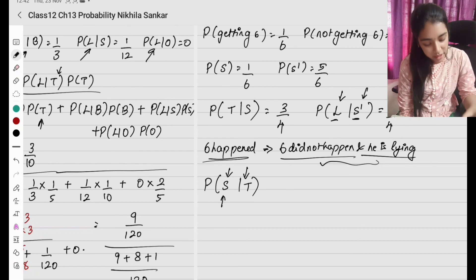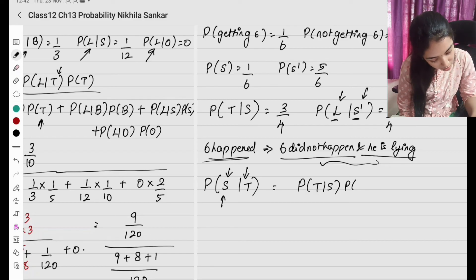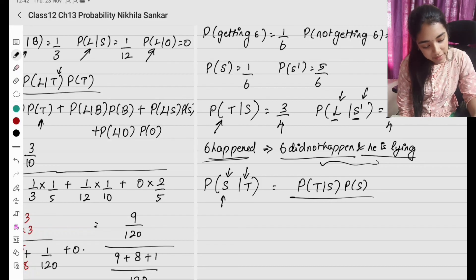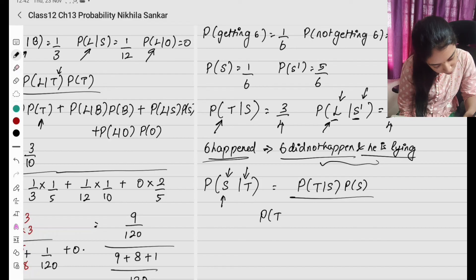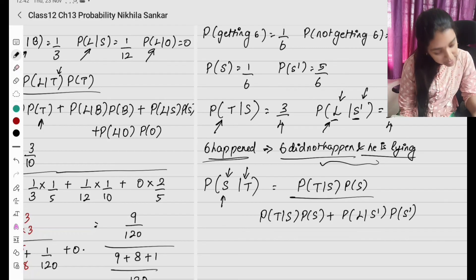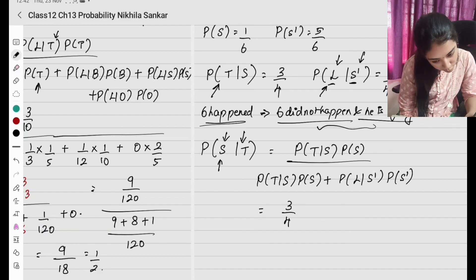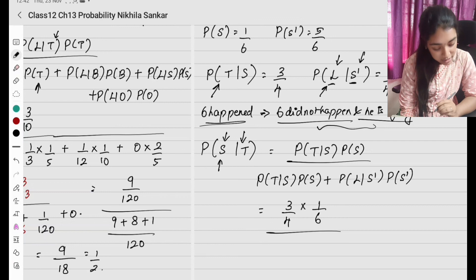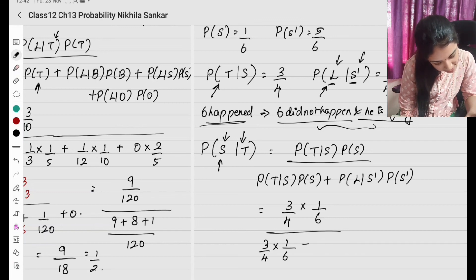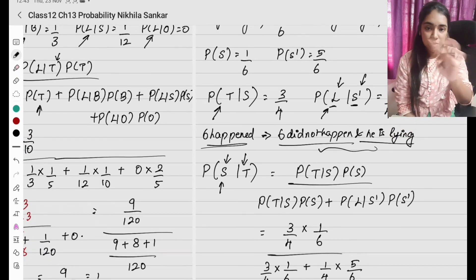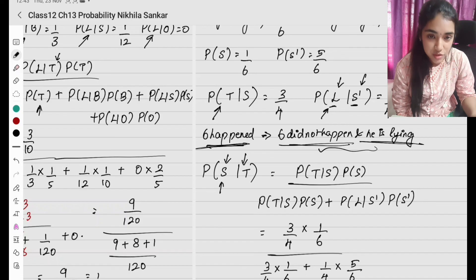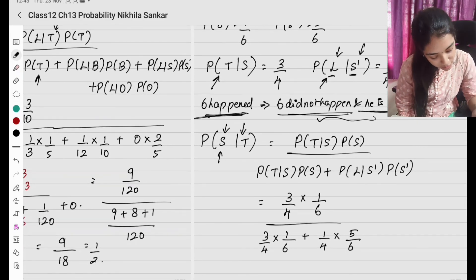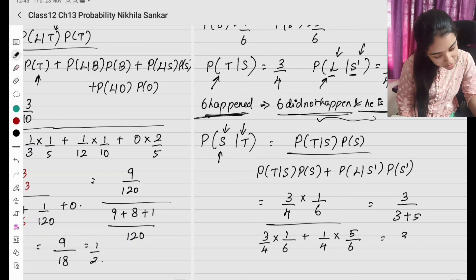Using Bayes' formula: probability of T given S times probability of S, divided by probability of T given S times P(S) plus probability of L given S-dash times P(S-dash). Substituting: 3 by 4 times 1 by 6, divided by 3 by 4 times 1 by 6 plus 1 by 4 times 5 by 6. Taking LCM as 24, numerator is 3, denominator is 3 plus 5 equals 8. Answer is 3 divided by 8.